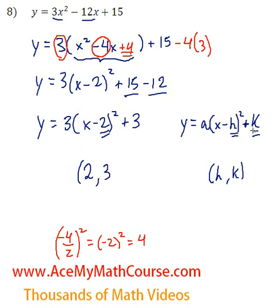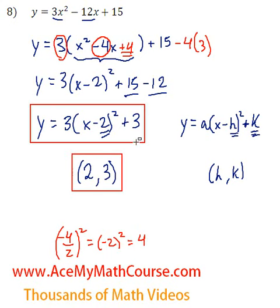And the y coordinate of the vertex will be just the 3. Because 3 is k. Just like over here. So that is the vertex. And that is the function after completing the square. So let me just write vertex down here. That's it.